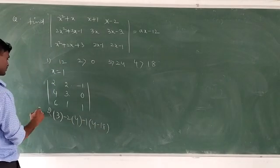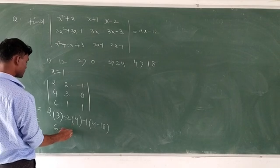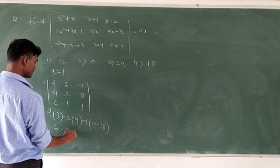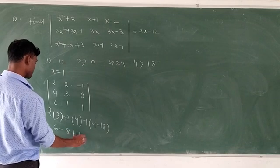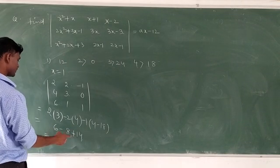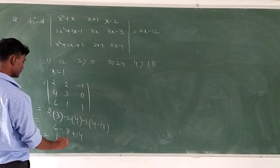6 plus 18. Now this is 6. Here 2 fours are 8. And minus here 18 minus 4 is equal to minus 14, plus 14. Here 14 plus 6, 20, 20 minus 8 is equal to 12. 12.